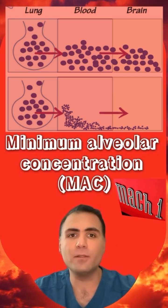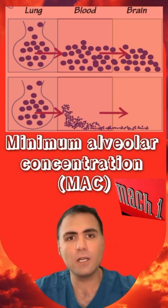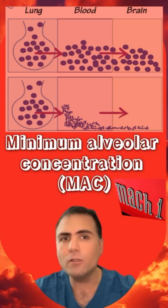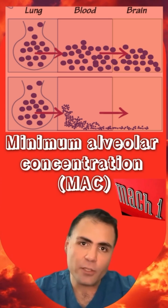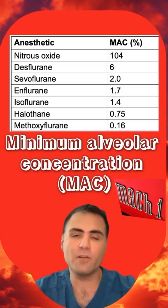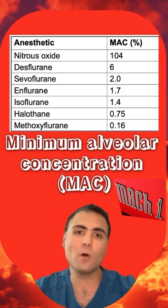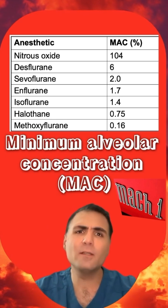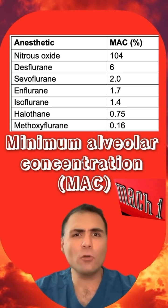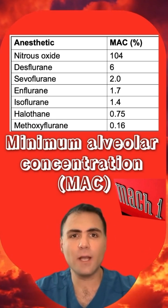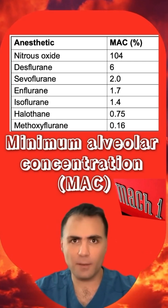MAC is expressed as a percentage of the alveolar gas mixture. The more potent the anesthetic, the lower its MAC value. For example, isoflurane has a MAC of about 1.15%, while desflurane is around 6%. Less potent agents require higher concentrations to achieve the same effect.